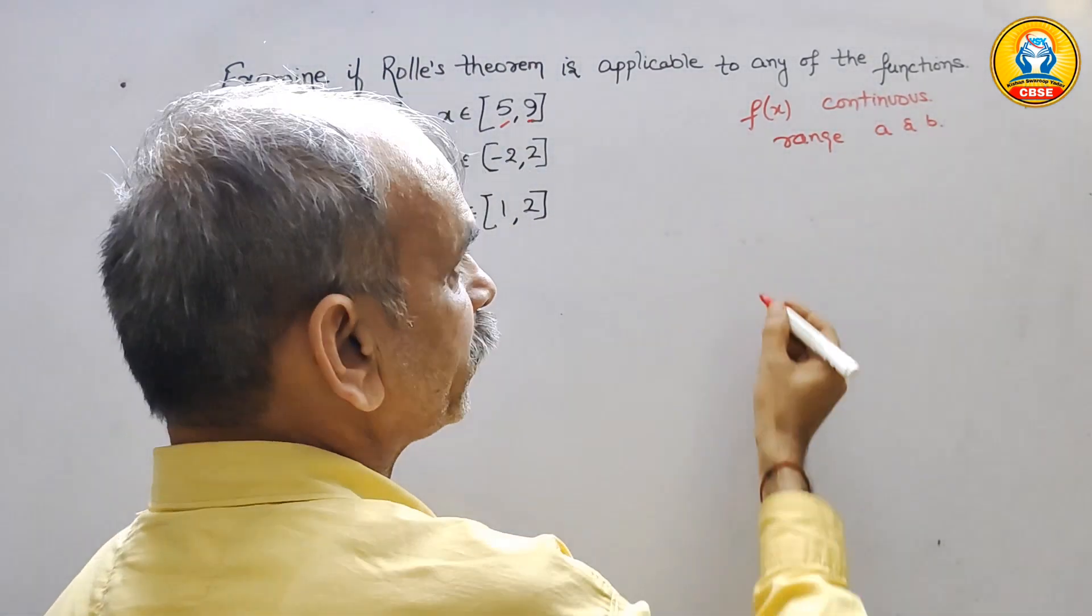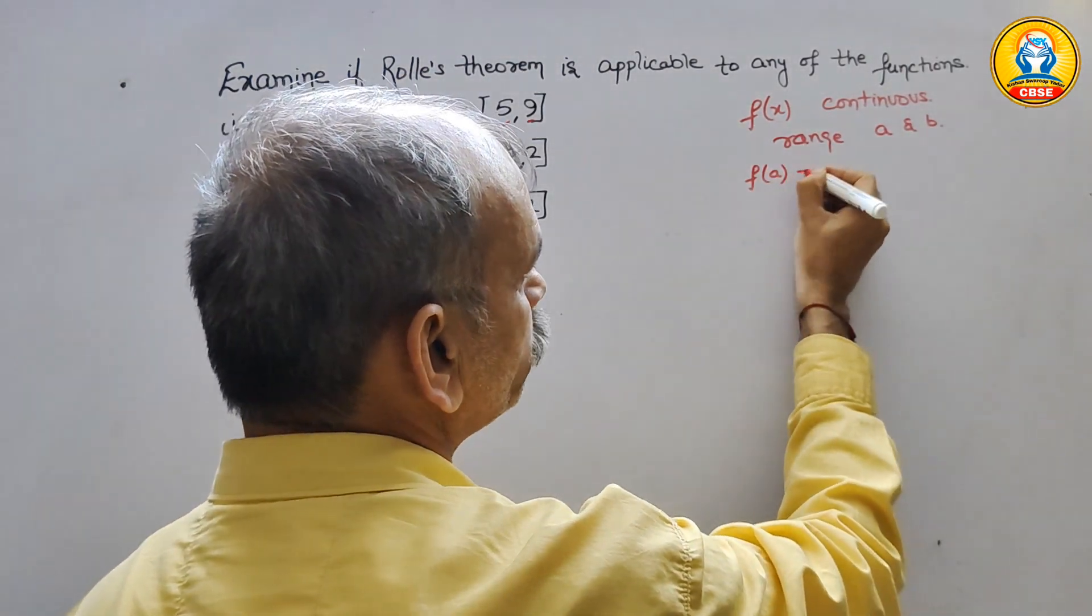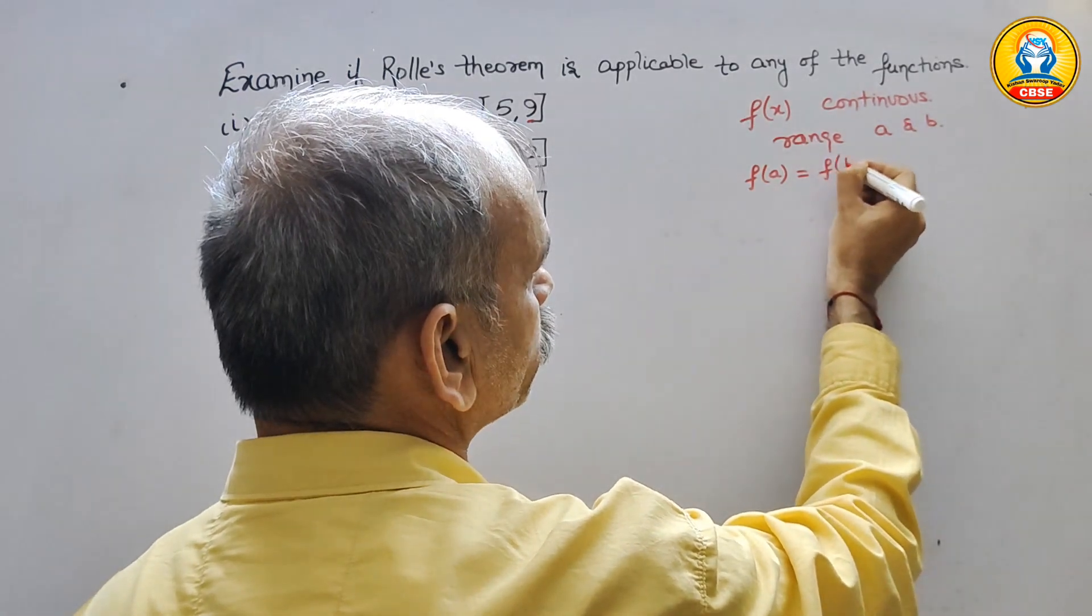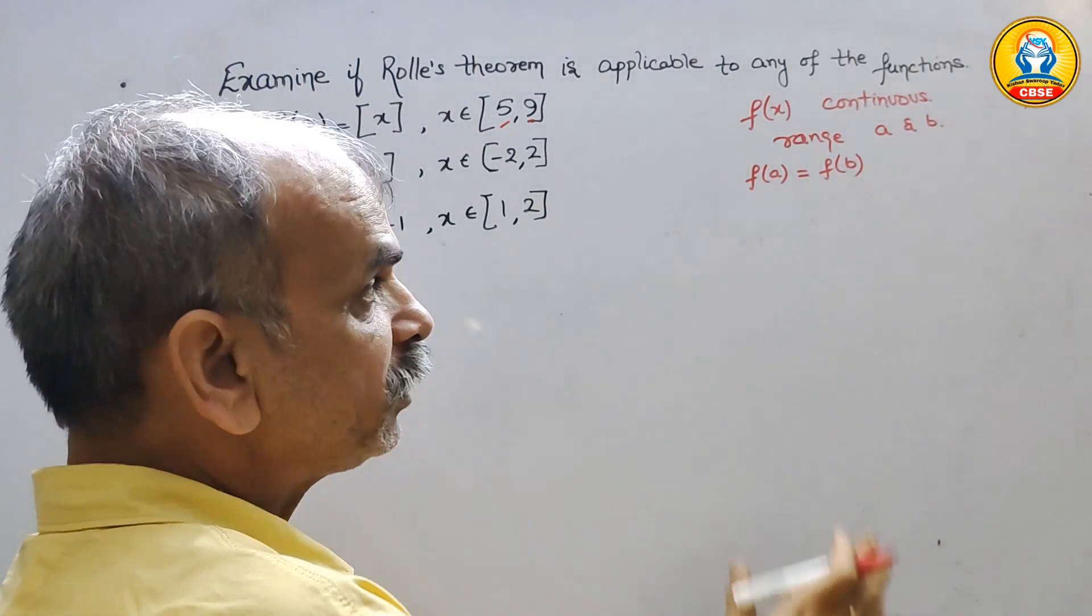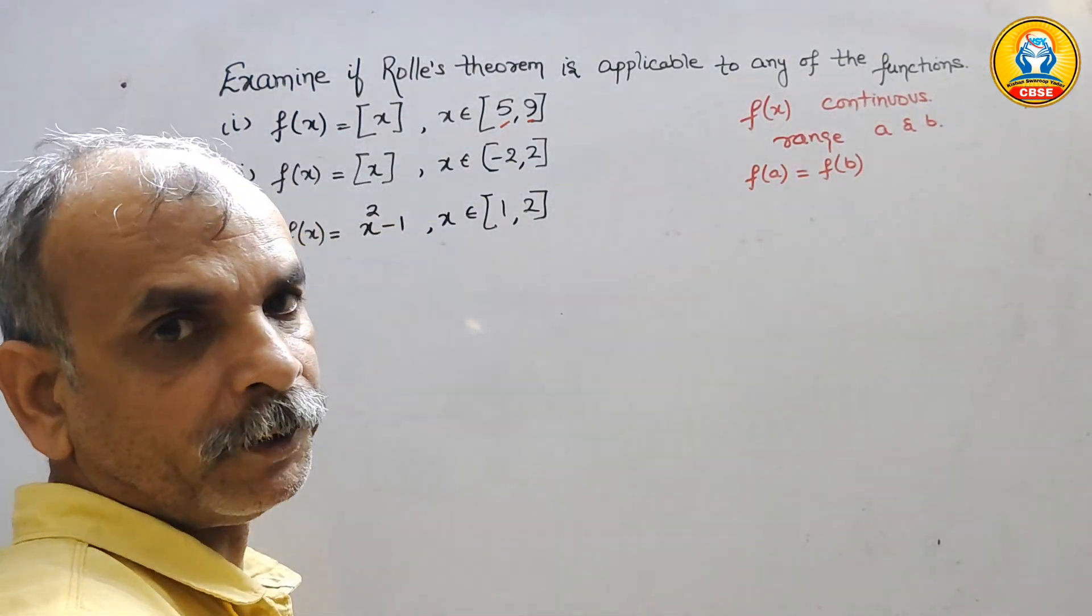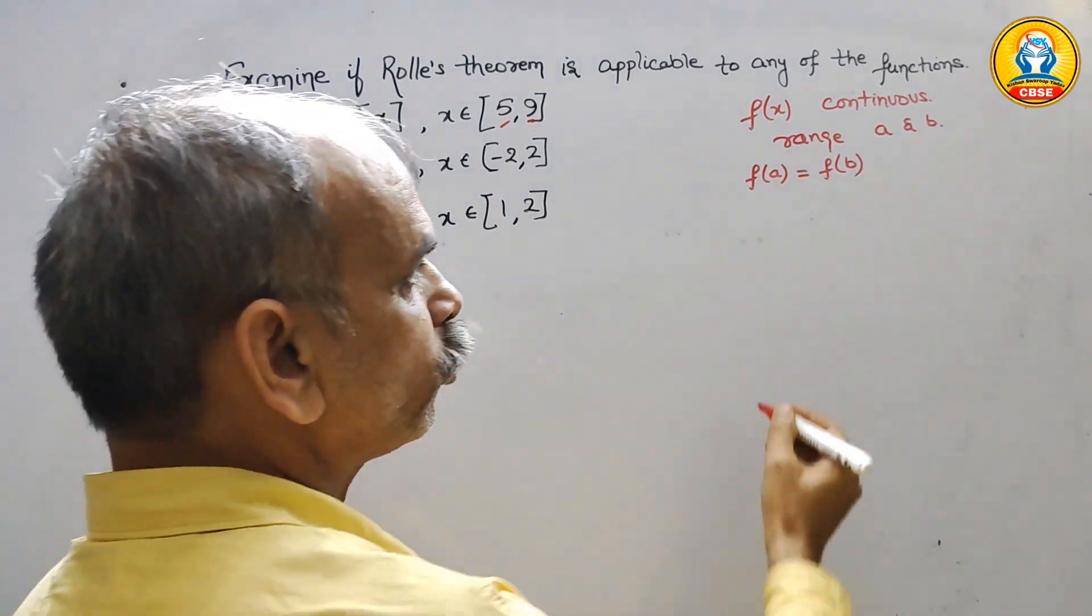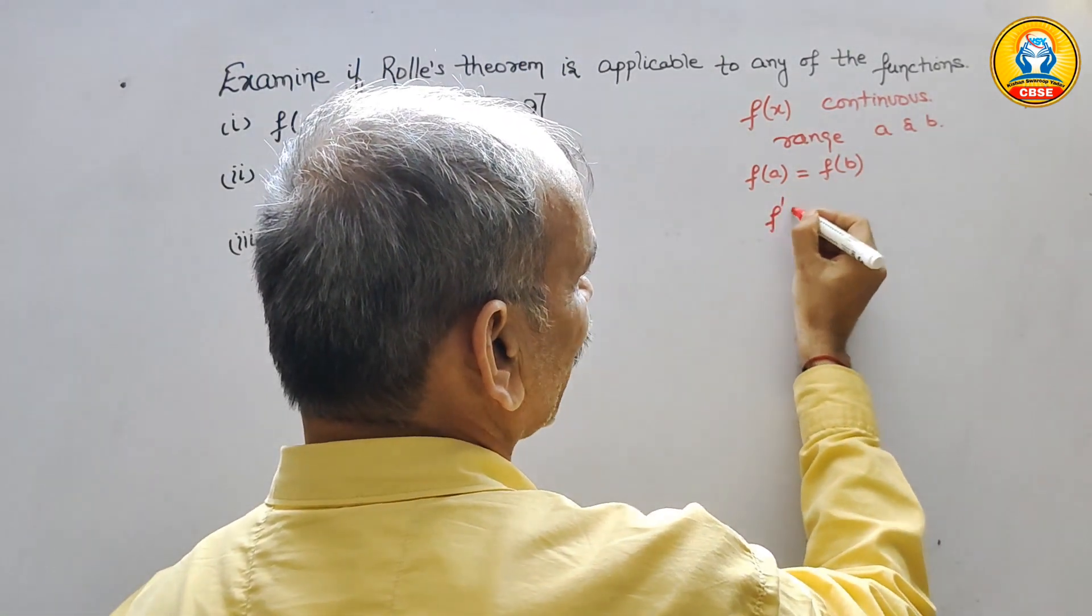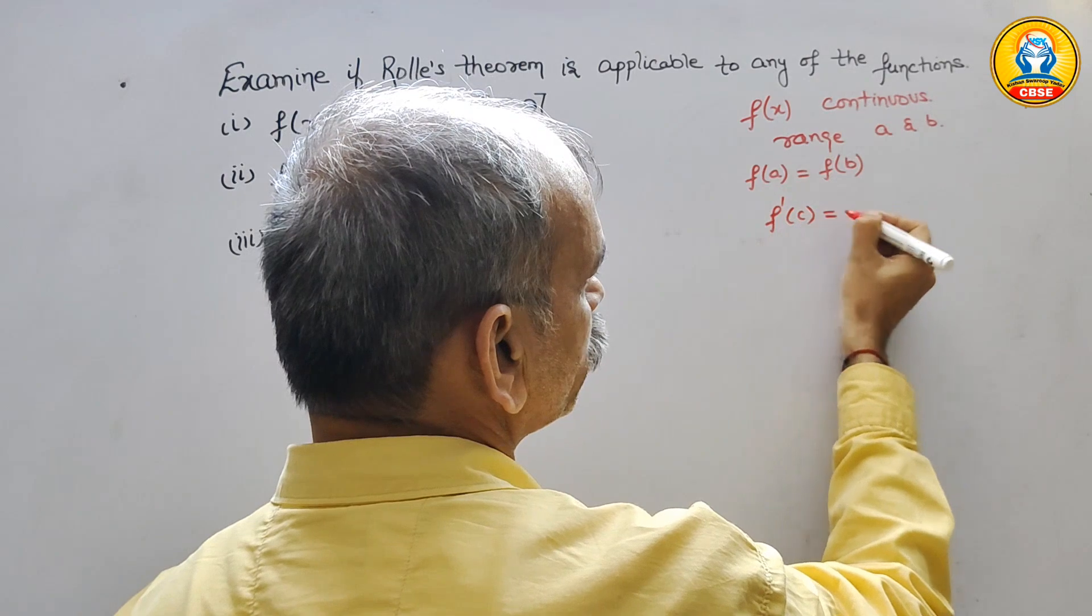Next, we have to find it out. F(A) should be equal to F(B). If this is possible, F(A) is equal to F(B), then only we have to go for F'(C) is equal to 0.